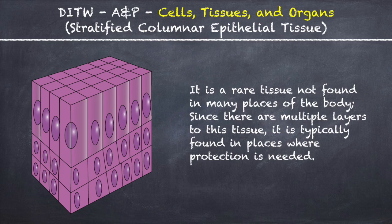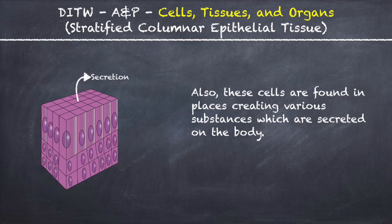Since there are multiple layers to this tissue, it is typically found in places where protection is needed. Also, these cells are found in places creating various substances which are secreted on the body.